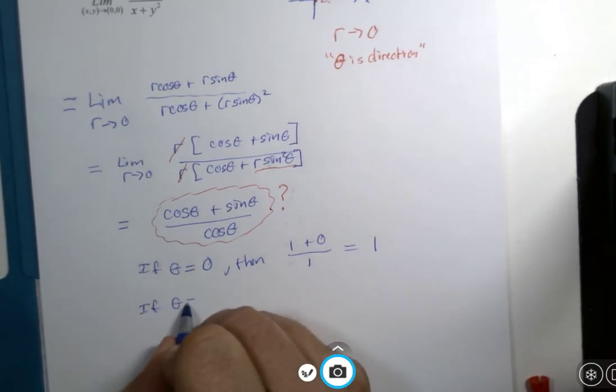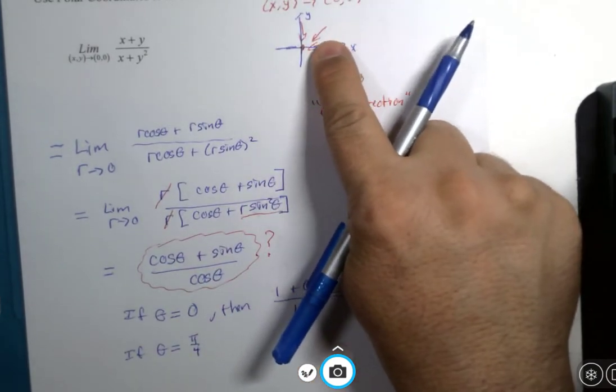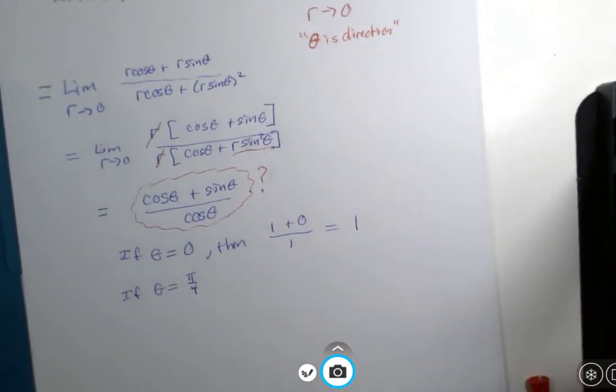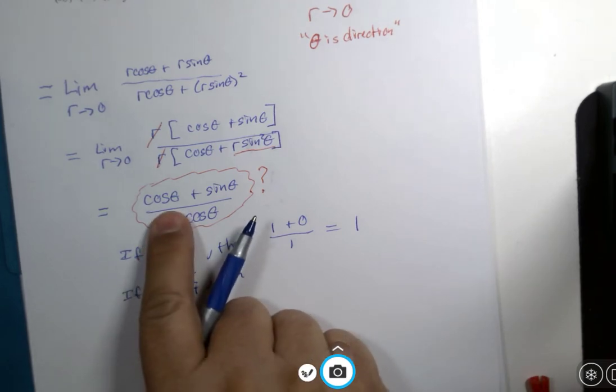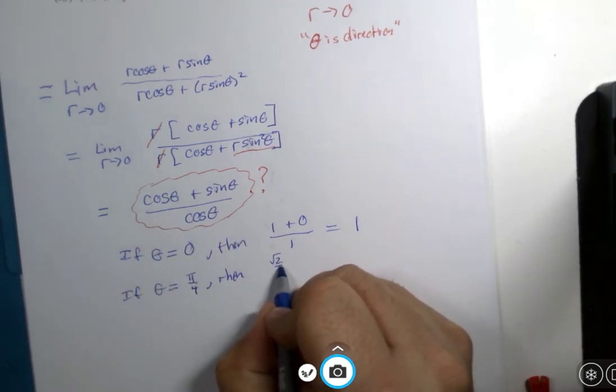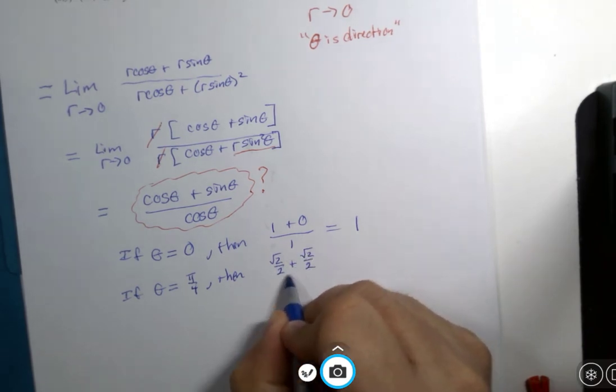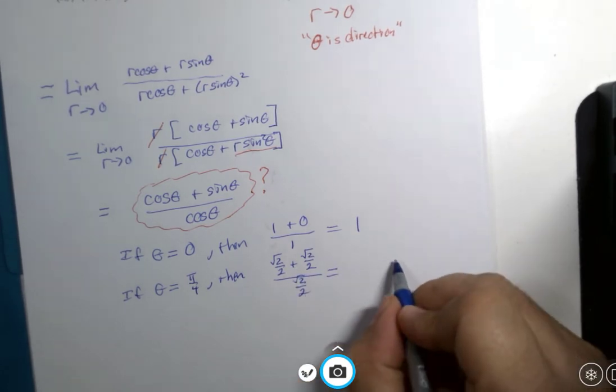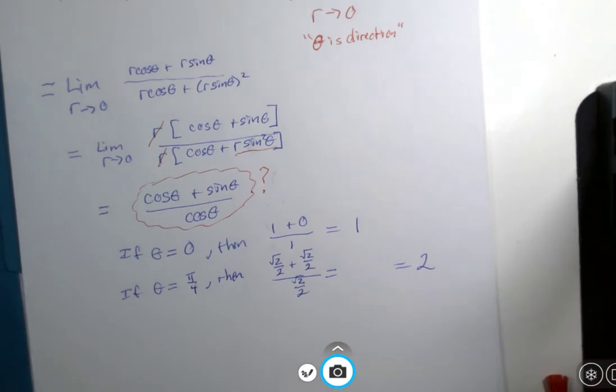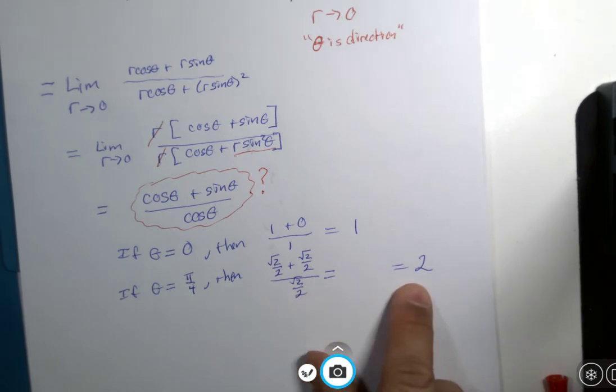If theta is pi over 4, we would be approaching the origin from a 45 degree angle. When we evaluate this, cosine of pi over 4 is root 2 divided by 2, sine of pi over 4 is root 2 divided by 2, and there's a cosine again. And this whole fraction becomes 2 with a little clever arithmetic. You have two of these in the numerator and one in the denominator.